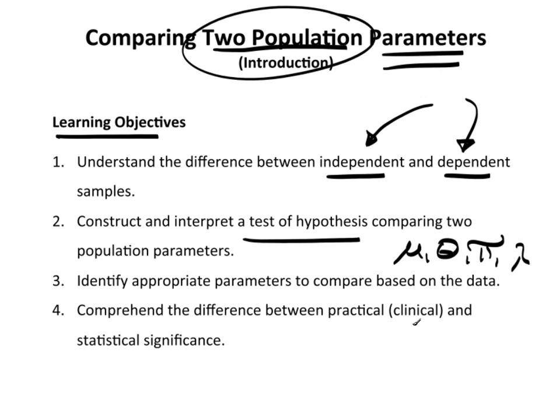We want to identify the appropriate parameters to compare based on the data, just like we've done before. That's really making reference to should you use mu or theta. And we want to comprehend the difference between practical, sometimes referred to as clinical depending on what area that you're working in, and statistical significance. This is really an extremely important concept.